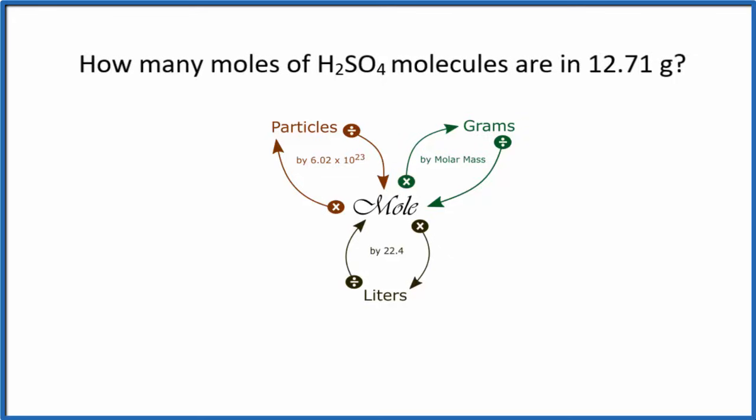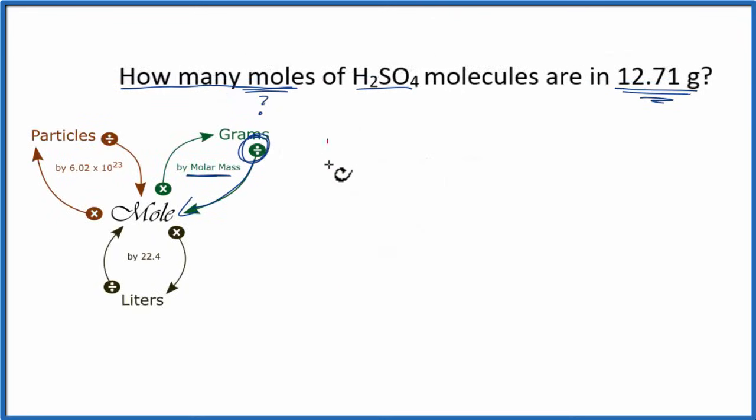This one follows the same pattern, but it's worded just a little bit differently. We're asking how many moles, so we're looking for moles, and we're given grams. So we want to find moles. That's what we're looking for, and we're given these grams here. So the word molecules, well it's correct to write it this way. Don't be distracted by it. We're going from grams, and we're trying to find moles. So grams to moles, we're going to divide by the molar mass. We write our grams, and the molar mass for H2SO4 sulfuric acid is 98.01 grams per mole.